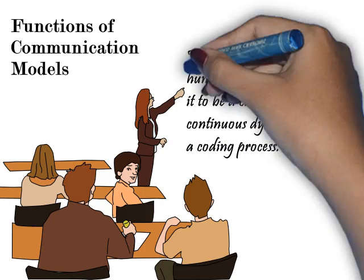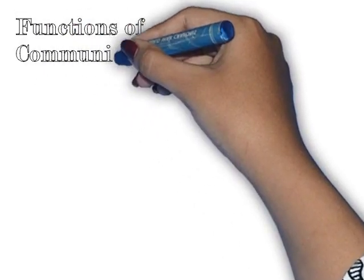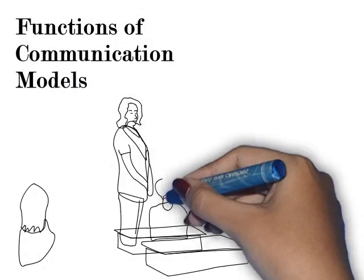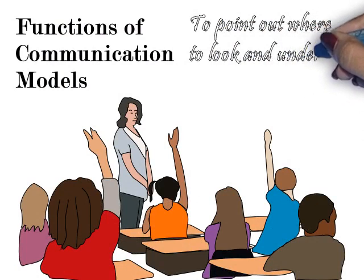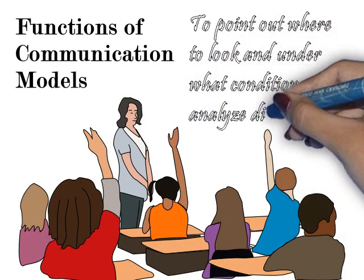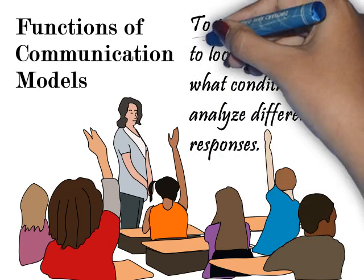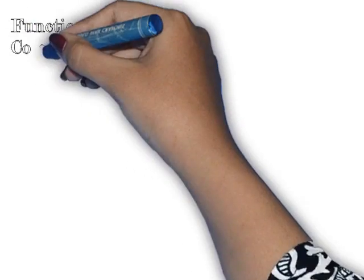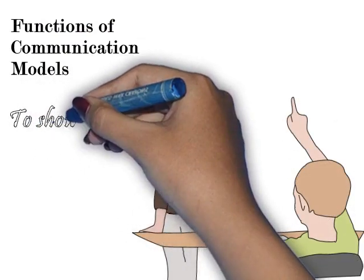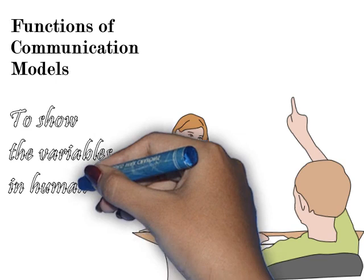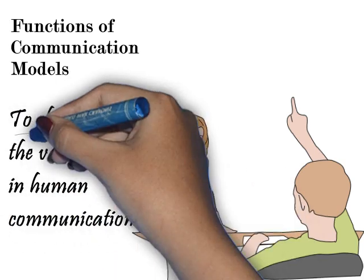It shows if communication is circular, complex, continuous, dynamic, or the decoding process of how we understand a specific message or information. The next function is that it points out where we should look and under what conditions we should analyze the different responses, so that we can give sound judgment on specific information presented to us. Furthermore, it shows the variables in human communication — pertaining to the different elements involved in the process of communication.